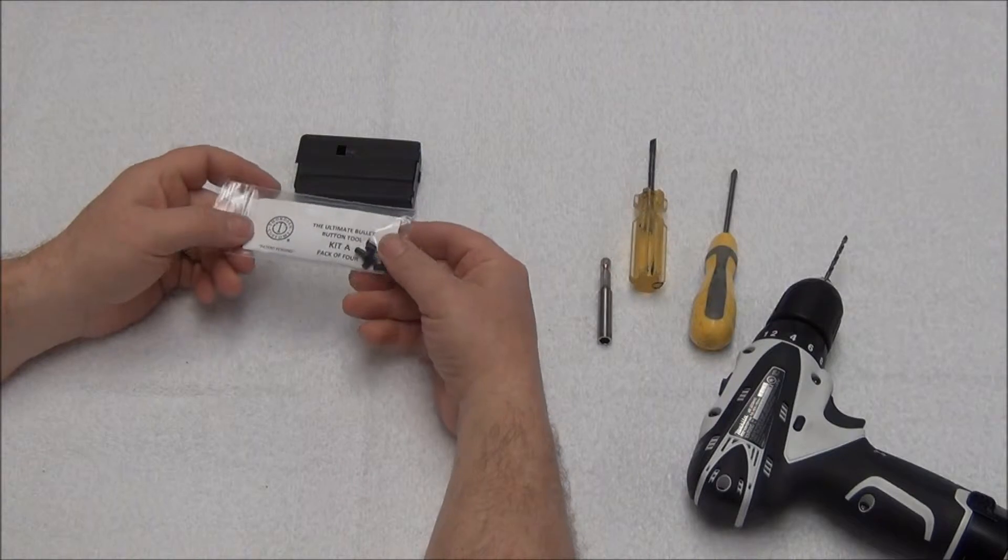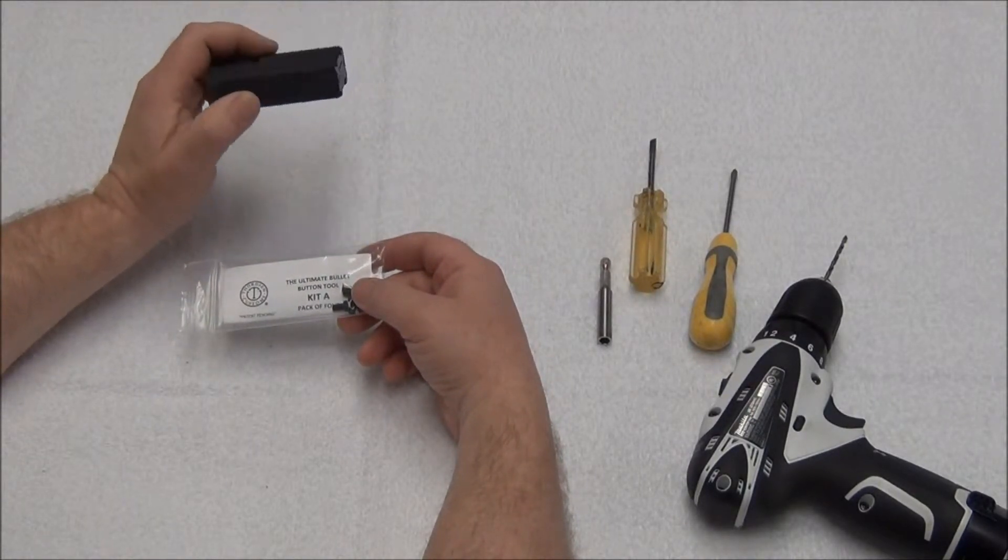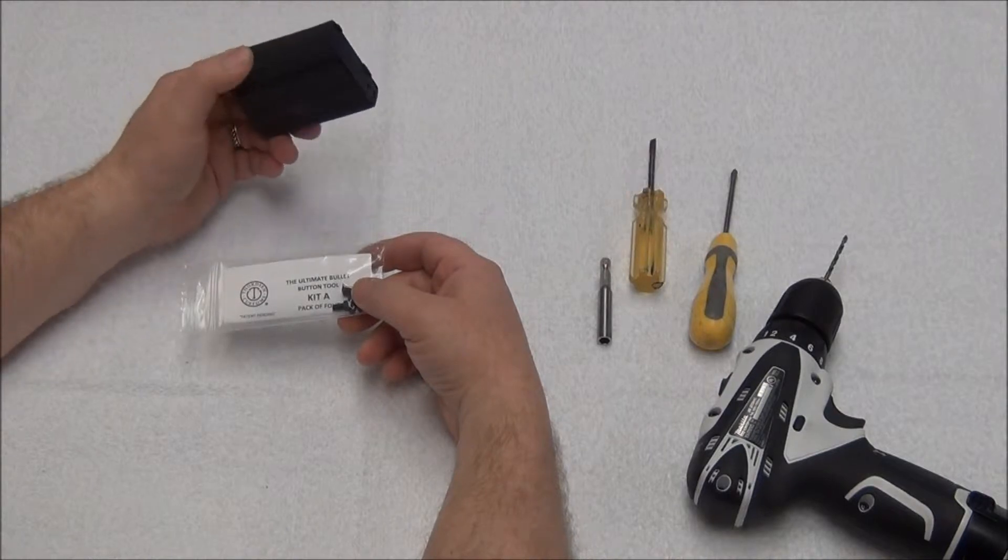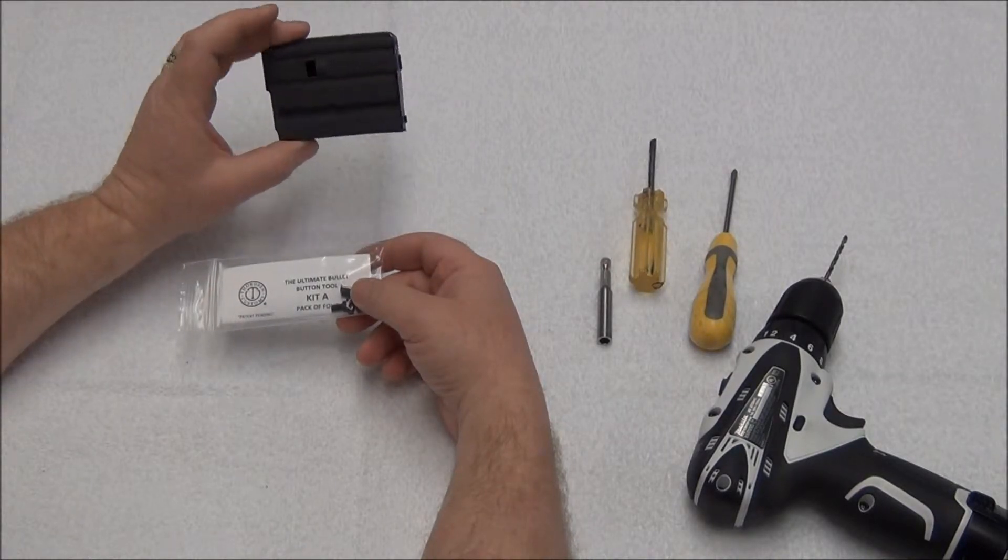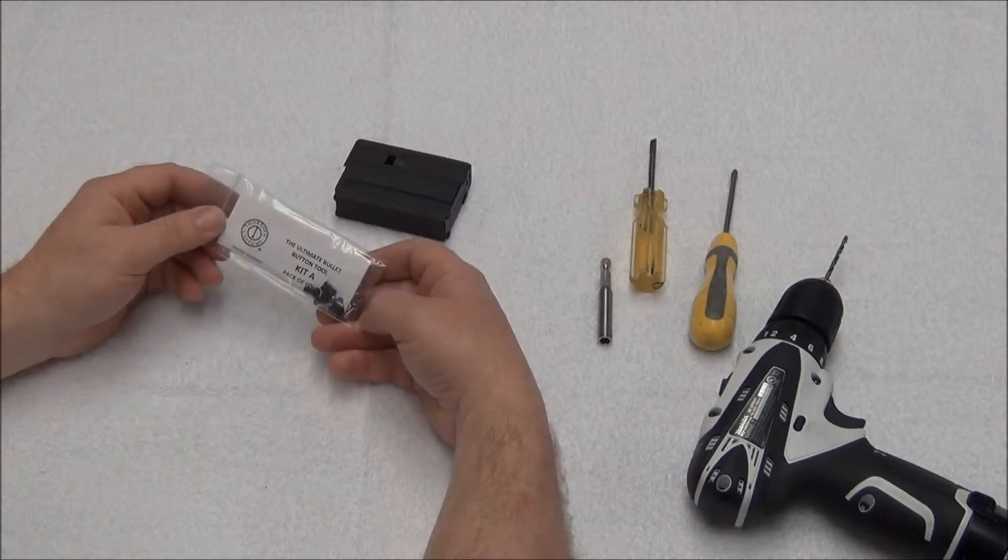We're going to install our A-Kit on a standard ASC aluminum magazine, a very simple install. These are probably one of the most common magazines there are out there. Let's get started.